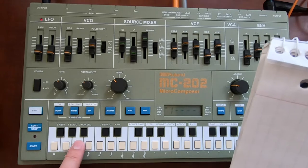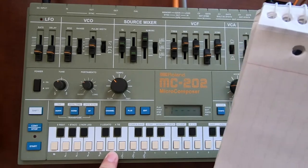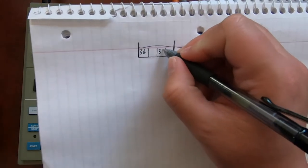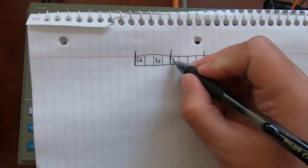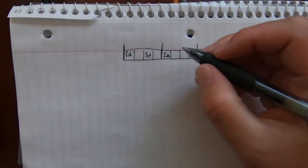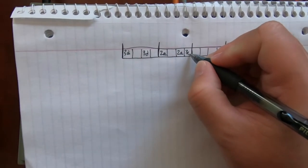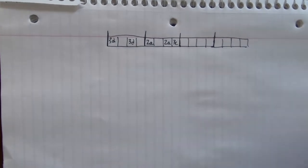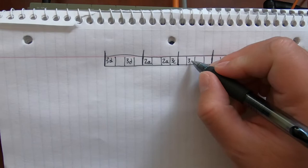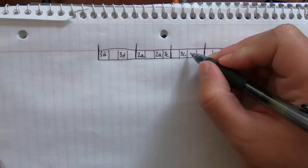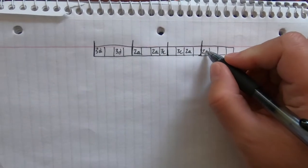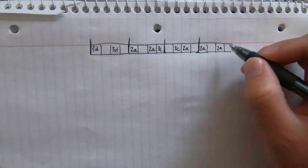My riff is starting with 3-D here. I'll put 3-D on the downbeat of 1, and then it was another 3-D on the and of 1. Then it went to 2-A on the downbeat of 2, and 2-A, 3-C. On the and of 2 there's a 2-A, and on the 'a' of 2 there's a 3-C. Then on the E of 3 there's 3-C, it goes to 2-A on the and of 3, and then 2-A on the downbeat of 4 and the 2-A on the and of 4.